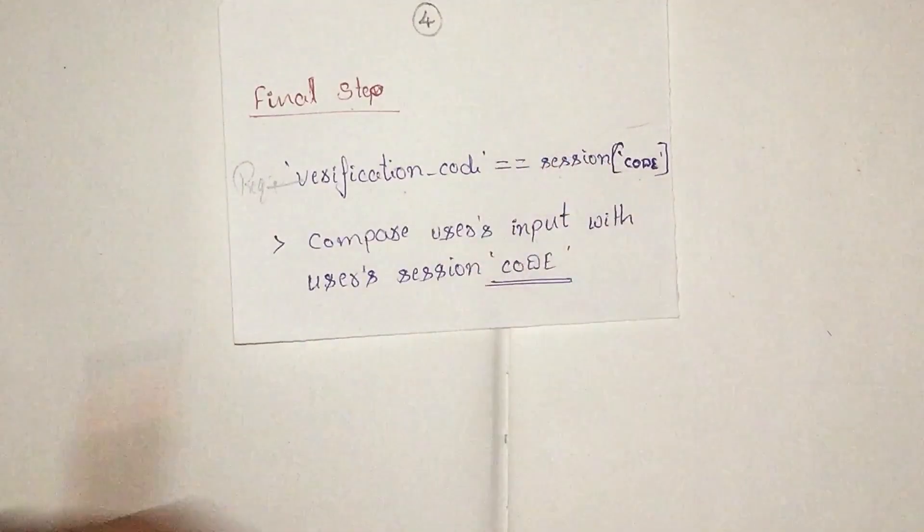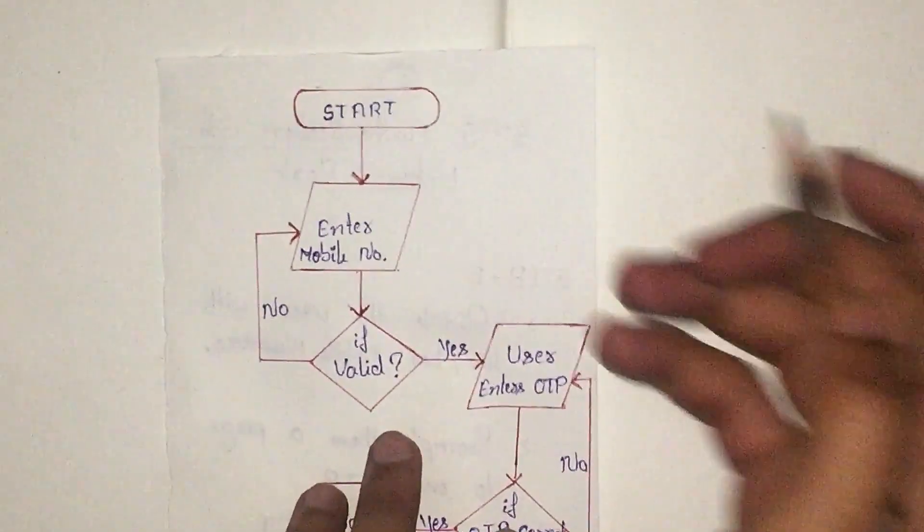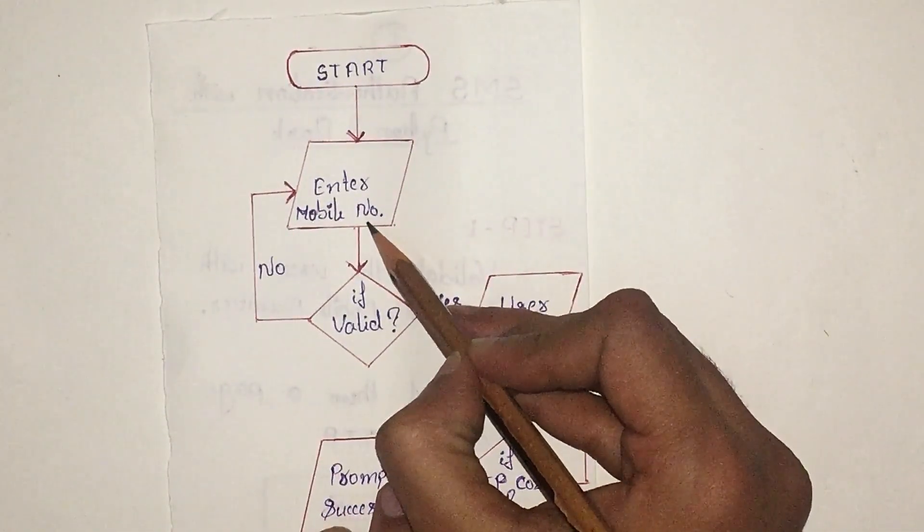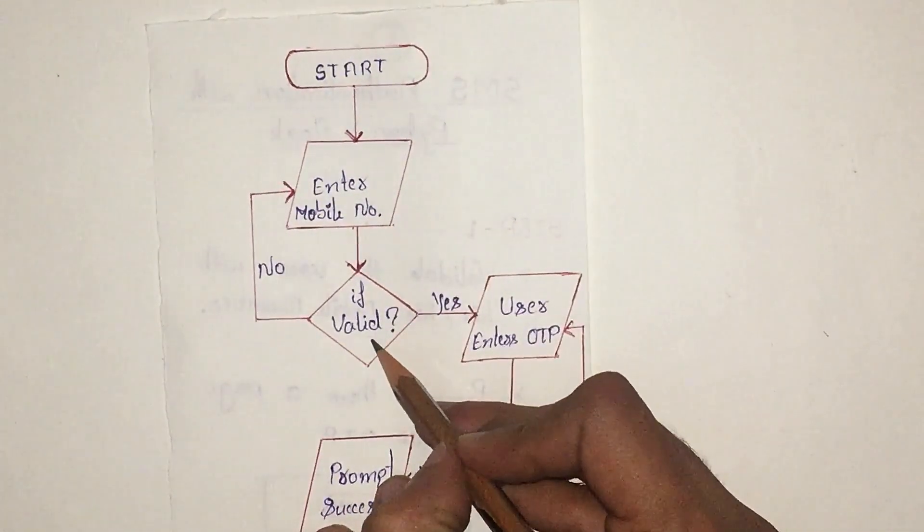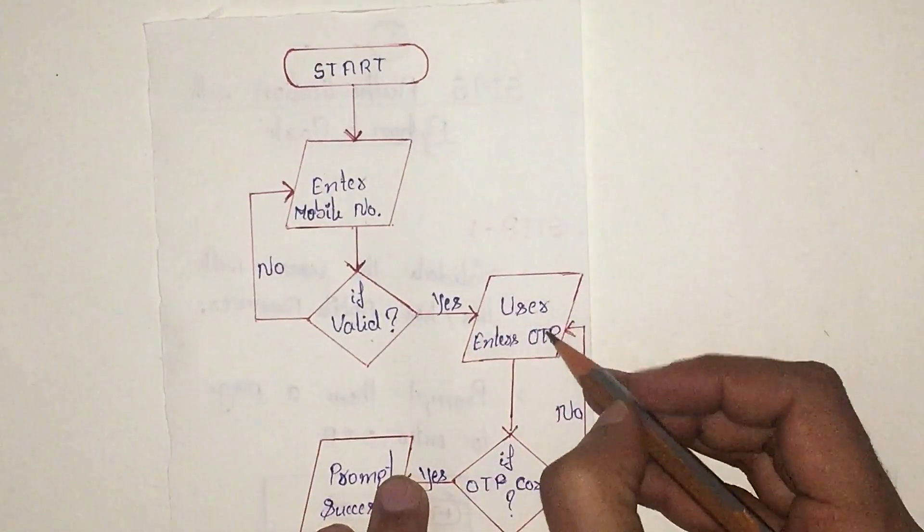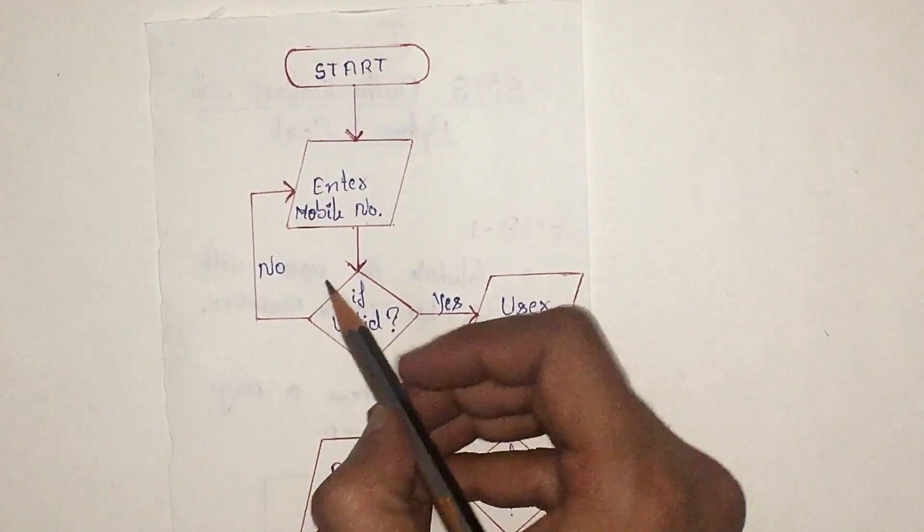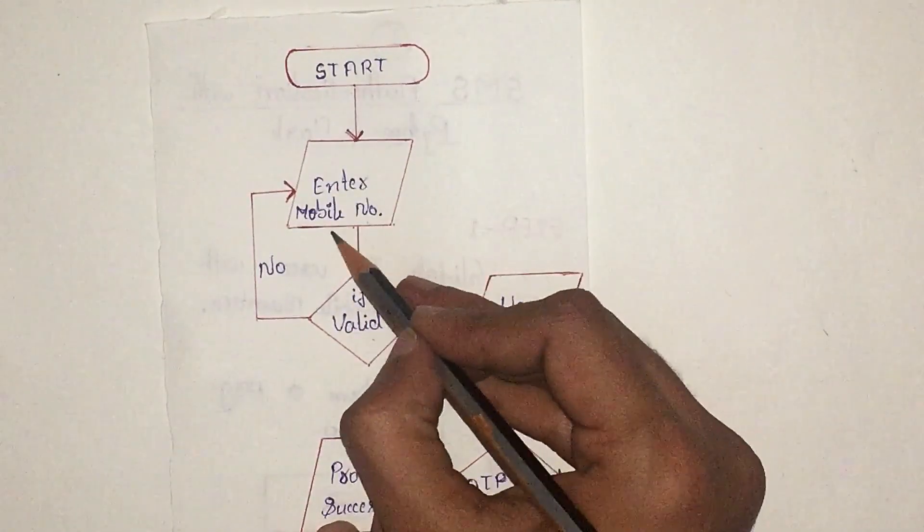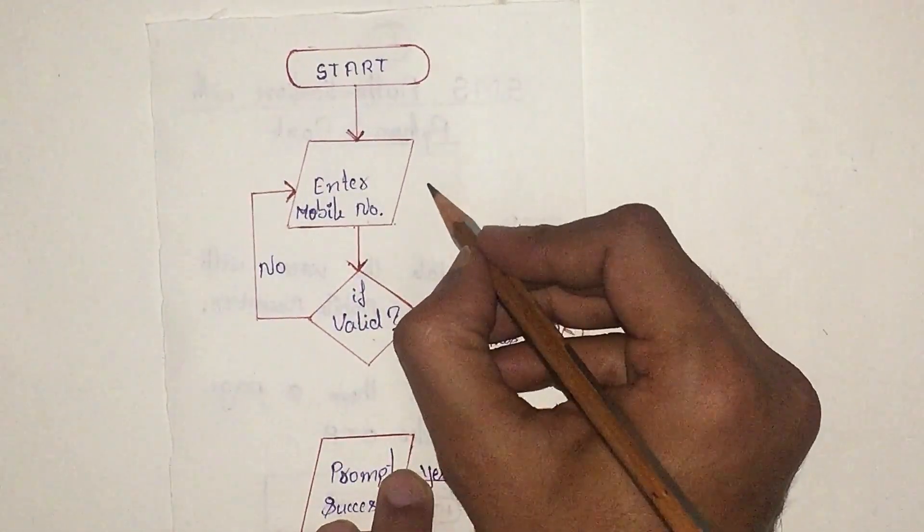The next step, I will show you the flowchart on how this entire thing works. We start from here: user enters mobile number. If valid, if it is yes, then user enters OTP. Else, no, prompt the user again saying the entered mobile number is not registered or please sign up.